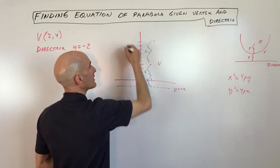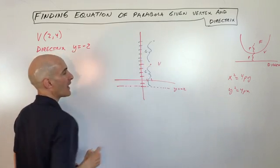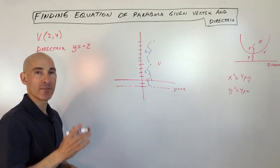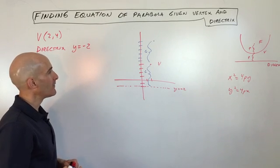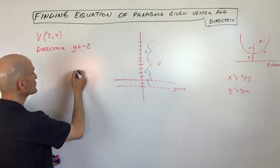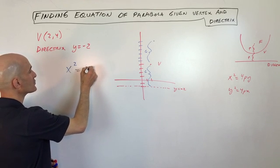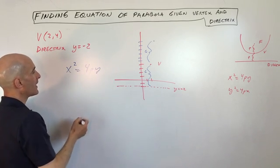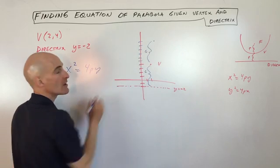And our parabola is going to look like this. And we can see it's going to be opening up and down. So that's going to be an x squared variety. So it's going to be like this: x squared equals 4py. And it's opening up. So p is going to be positive.